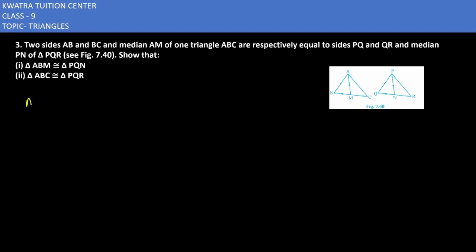As we know AM is a median. Median means that it divides the parts into equal halves. So what does this mean? BM is equal to MC, and it is also equal to half of BC.